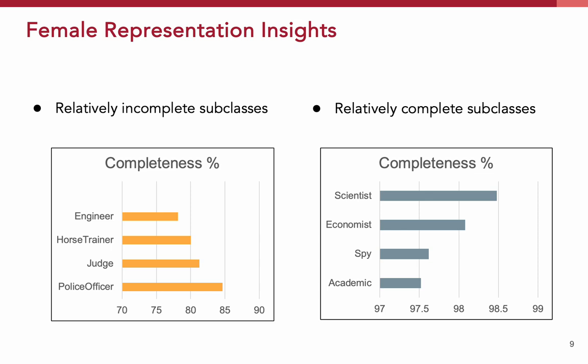On the right side, we highlight professions where female representation is more complete, close to the benchmark of 100%. Professions like scientists, economists, spies, and academics show completeness percentages between 97% and 99%. This is encouraging as it shows a near-equal visibility and acknowledgement of women's contributions in these fields.